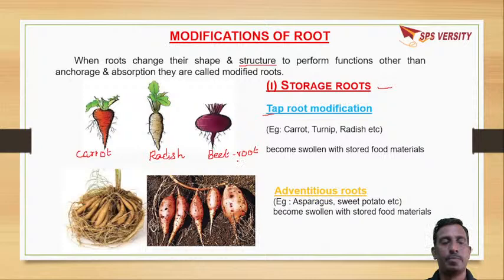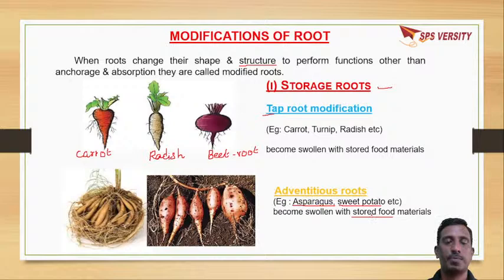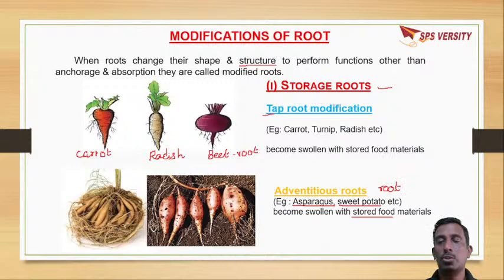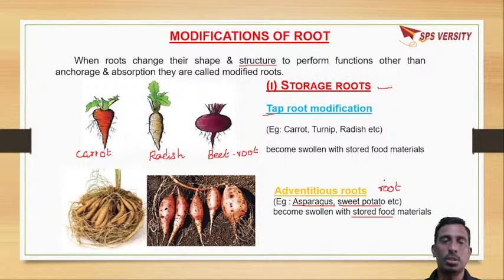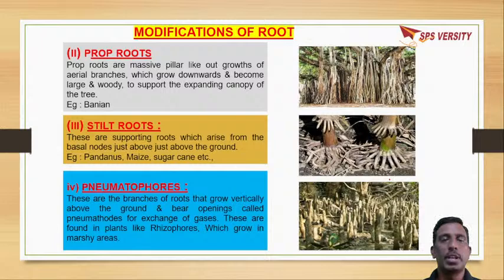As for adventitious roots - roots arising from other than the radicle - like asparagus and sweet potato, where adventitious roots store food. The edible part in sweet potato is the root, not a fruit. In potato, the edible part is the stem - there is a slight difference. Sweet potato edible part is root; potato edible part is stem, where stem stores food. Storage roots is one root modification.